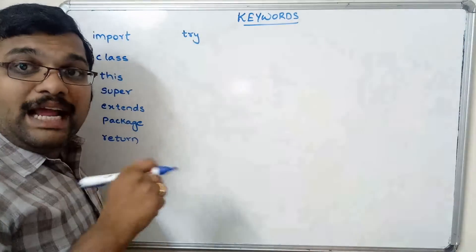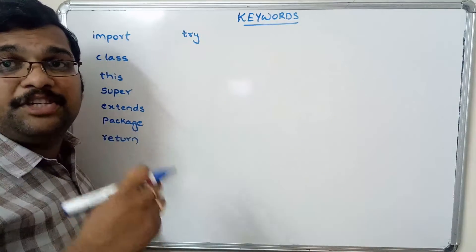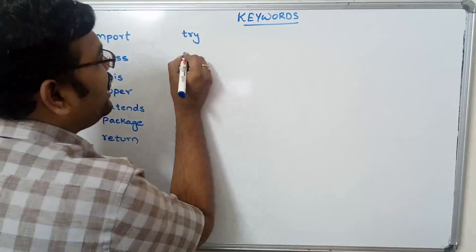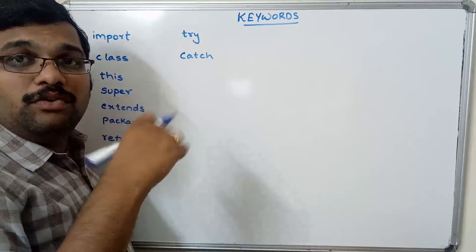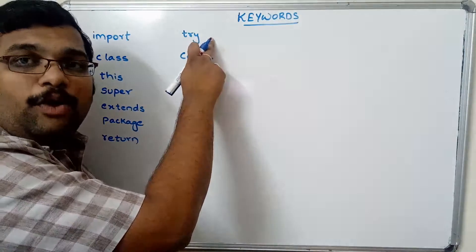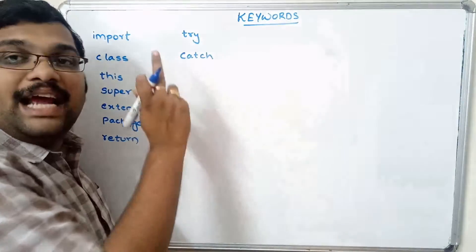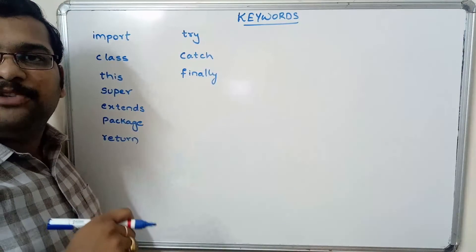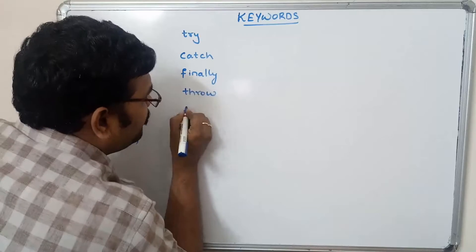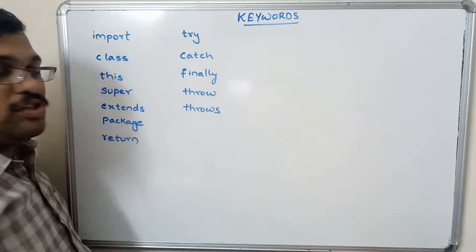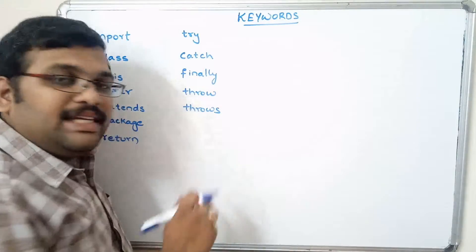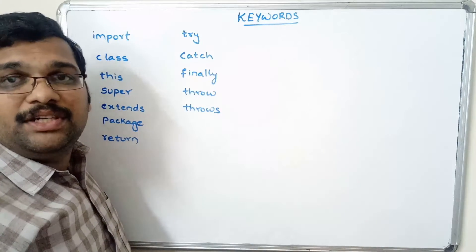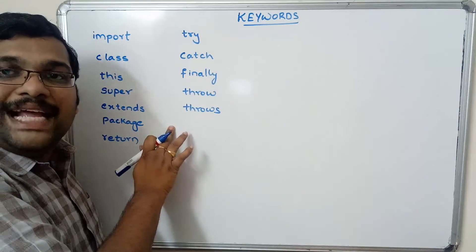The try keyword is used in exception handling. If any exception is raised, we use a try-catch block. The code is written in the try block, and whenever an exception is raised the catch block catches it. The finally keyword is also used in exception handling. The throw and throws keywords are used to throw an exception — they can be used in a class or method that throws an exception whenever one is raised.